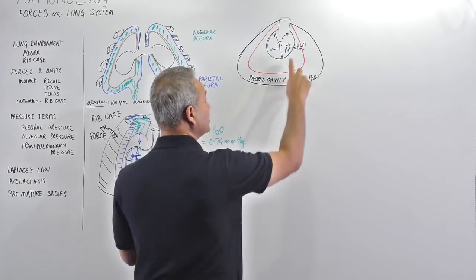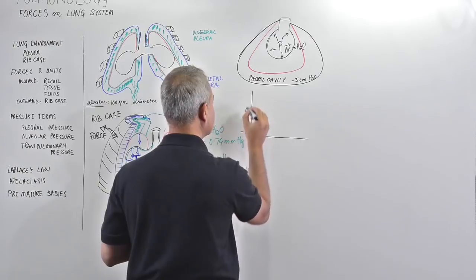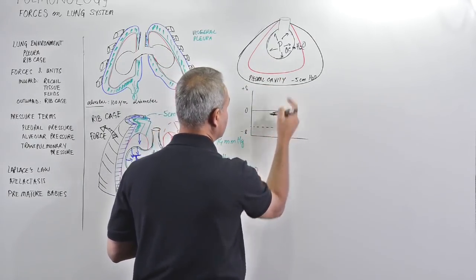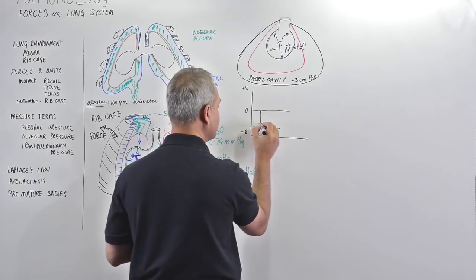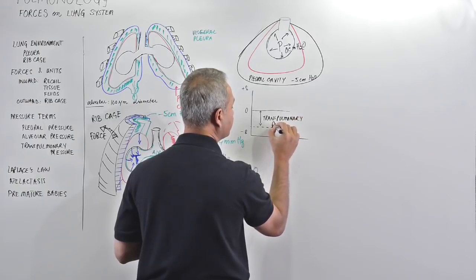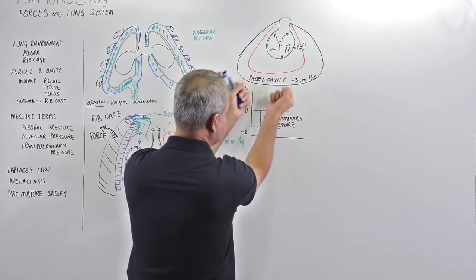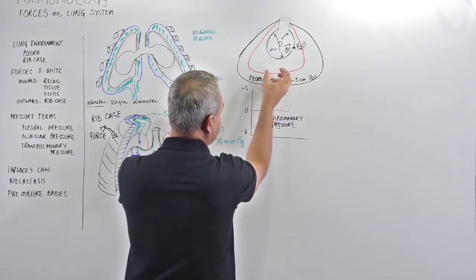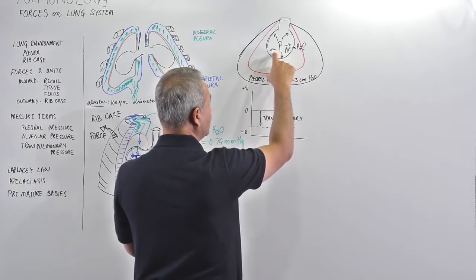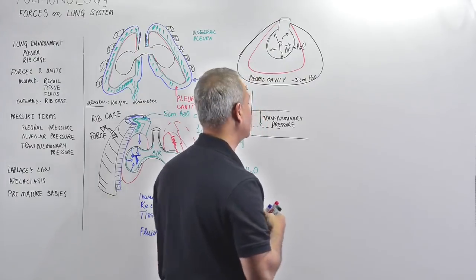The pressure difference between them is called transpulmonary pressure. On a graph, if alveolar pressure is 0 and pleural pressure is minus 5, the transpulmonary pressure is minus 5. The chest wall pulls the cavity outward, the negative pleural pressure pulls the lungs outward, and the lungs pull the alveoli open. The transpulmonary pressure is the difference between alveolar and pleural pressure - it is different from pleural pressure and different from alveolar pressure. Please remember that.